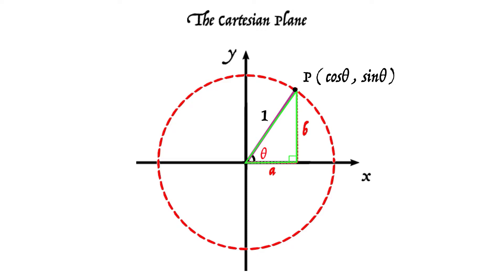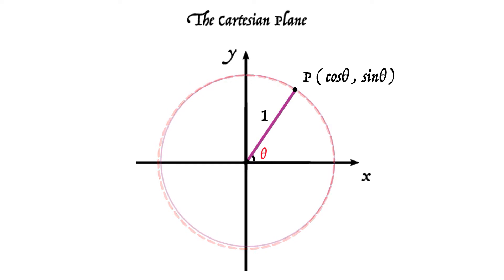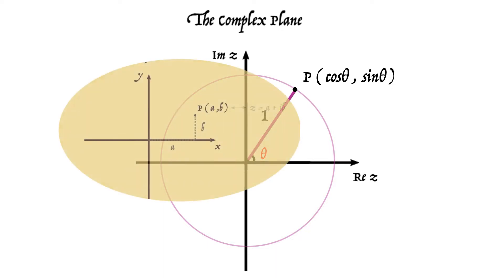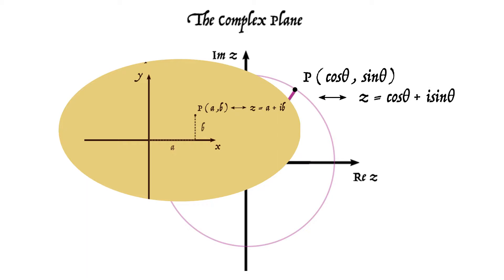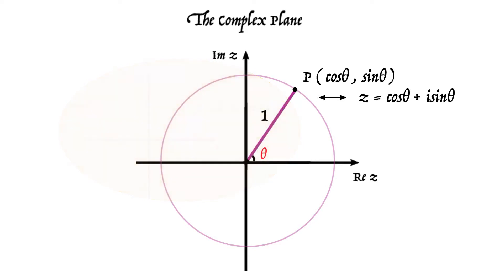The coordinates can be written as cos theta, sin theta, where theta is the amount of rotation that a radius is taken from the x axis anti-clockwise to get to the point. Now going back to the complex plane, each point (a, b) represents a complex number a plus ib. So in this case cos theta, sin theta will represent the complex number cos theta plus i sin theta — true for all points on the unit circle in the complex plane.